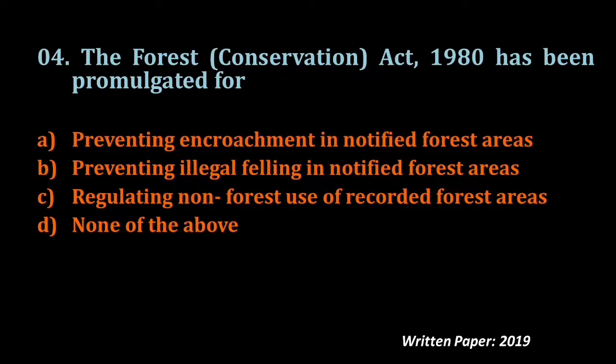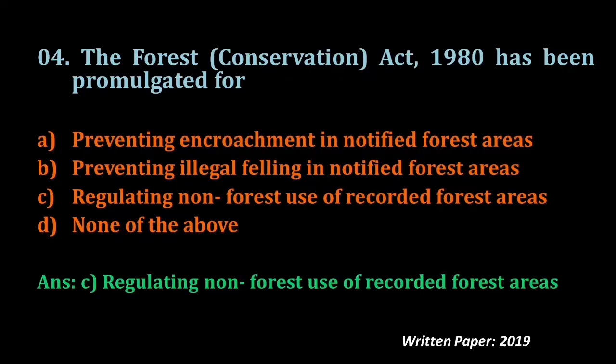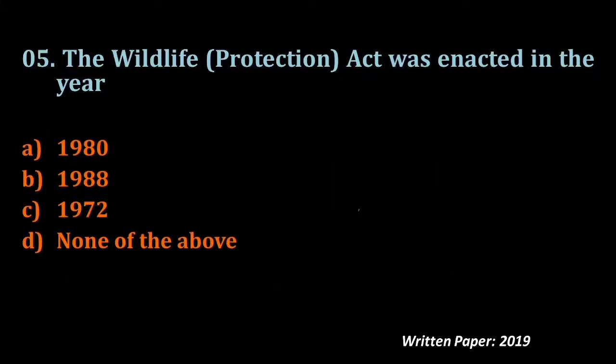Question number four comes from another act — the Forest Conservation Act 1980. The Forest Conservation Act 1980 has been promulgated for: preventing encroachment in notified forest areas; preventing illegal felling in notified forest areas; regulating non-forest use of recorded forest areas; or none of the above. The answer is C — regulating non-forest use of recorded forest areas — as written in the preamble of that act.